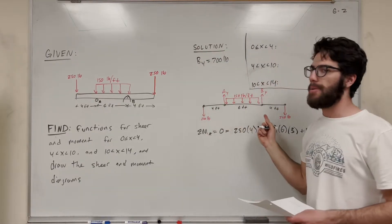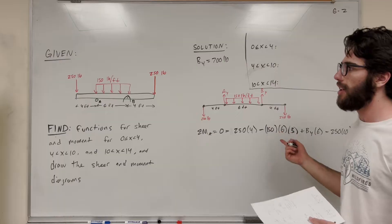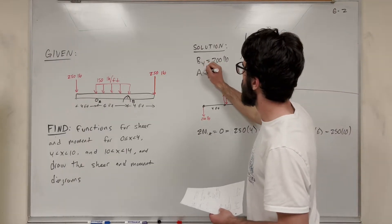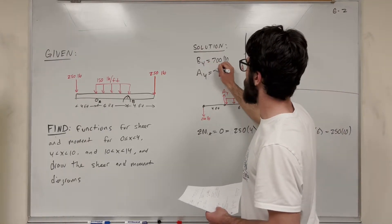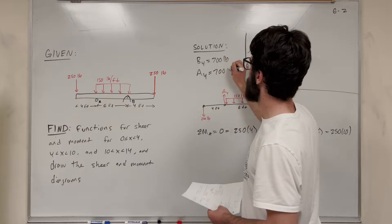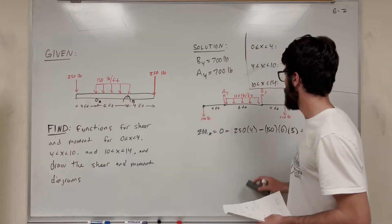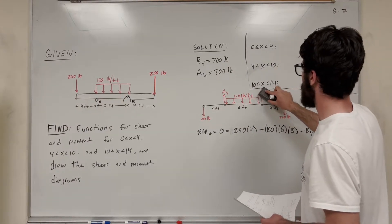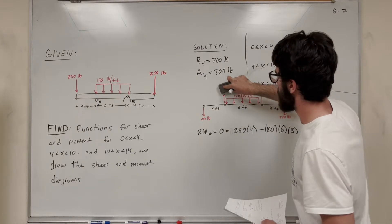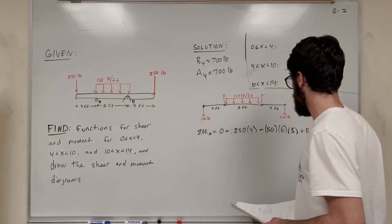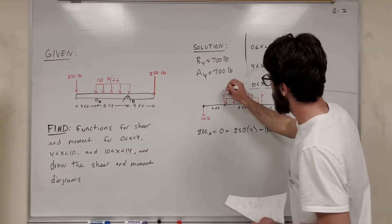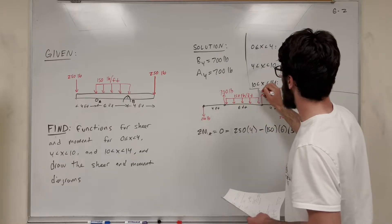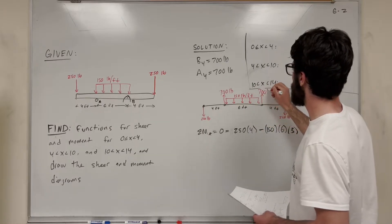You can tell by symmetry, or by taking the sum of forces in Y, that A of Y is also equal to 700 pounds. So we can replace those in our free body diagram — 700 pounds for both supports.